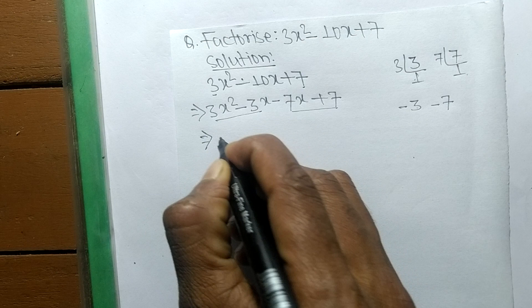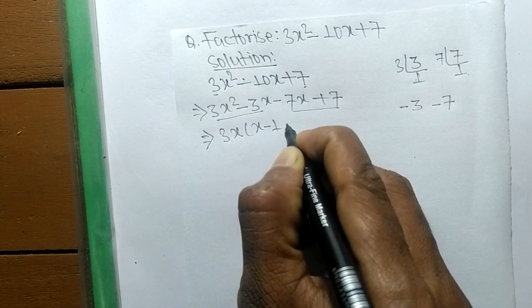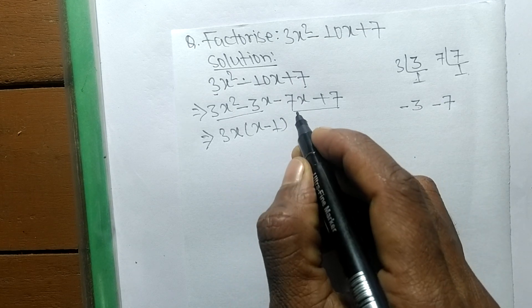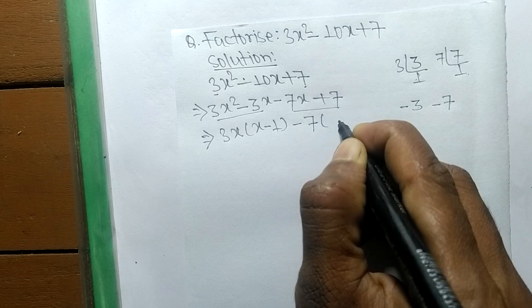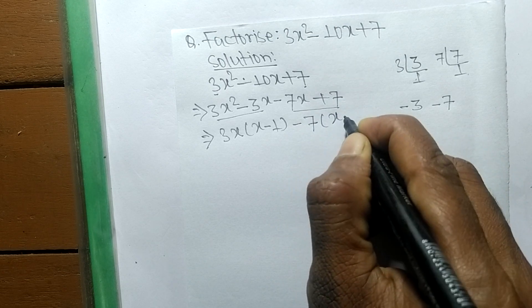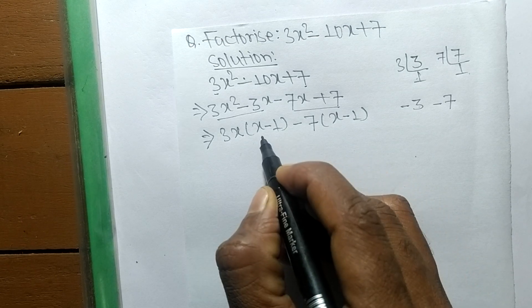In the first pair, the common factor is 3x, so the remaining is (x - 1). In the second pair, the common factor is -7, so the remaining part is (x - 1).